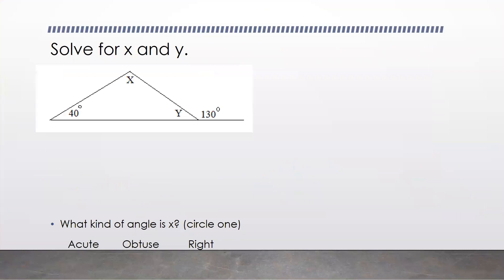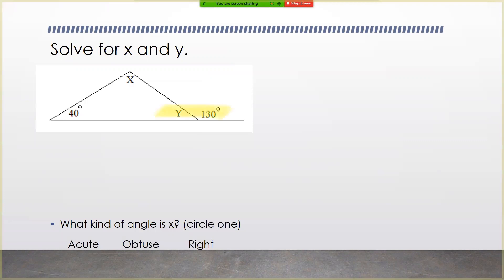Question number four asks us to solve for x and y, and then identify what kind of angle x is. These two angles add together to form a straight line, so they have to equal 180. So y plus 130 must equal 180 because they are supplementary. Subtract 130 from both sides and y equals 50 degrees.